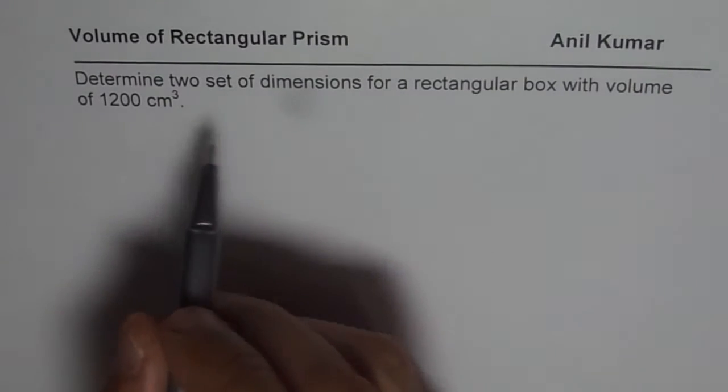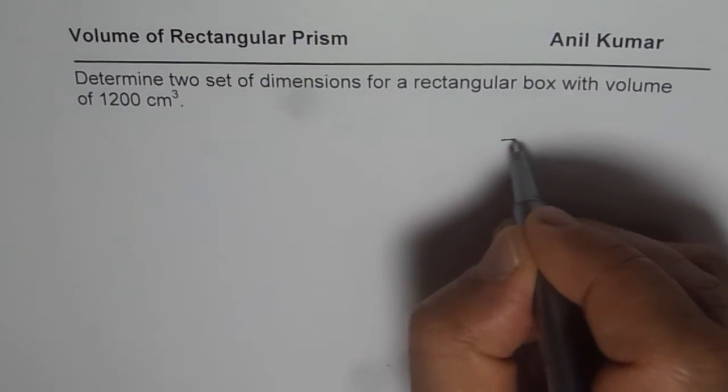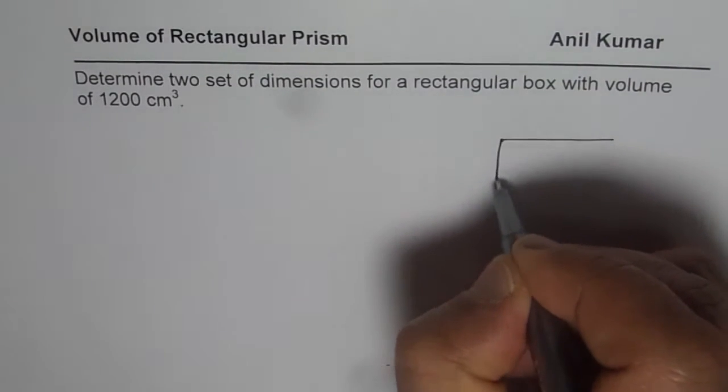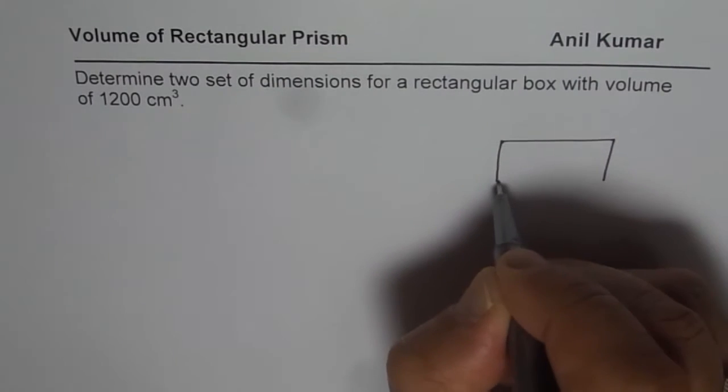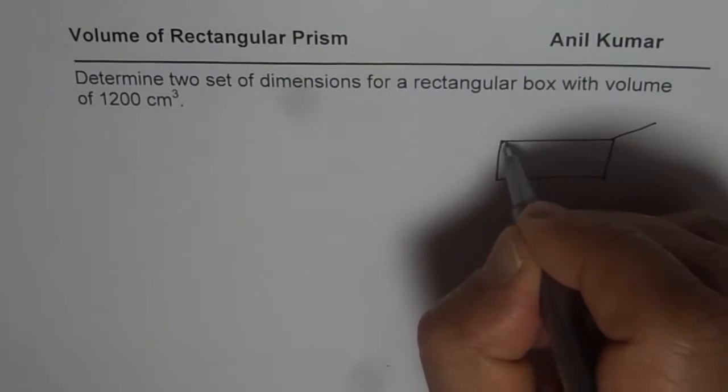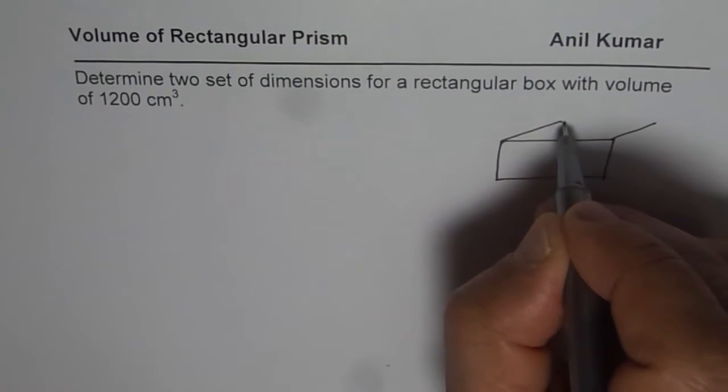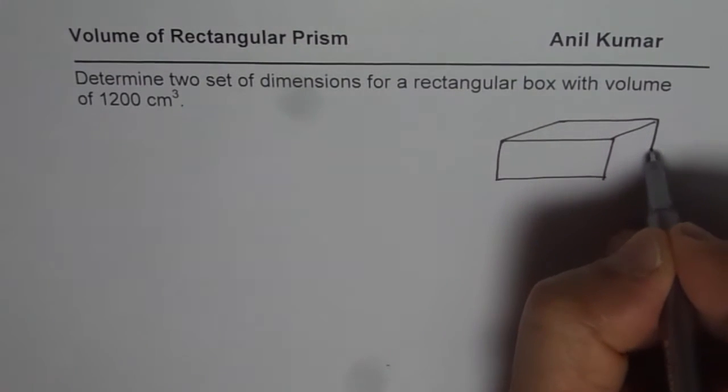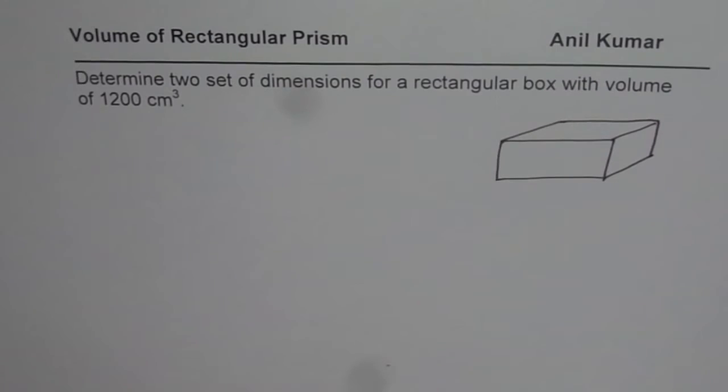So that is the question. We have a rectangular box, let's make one. Let us say we have this rectangular box and the volume of this rectangular box is 1200 centimeter cube. Now what are the possible dimensions? We could actually have many possible dimensions.